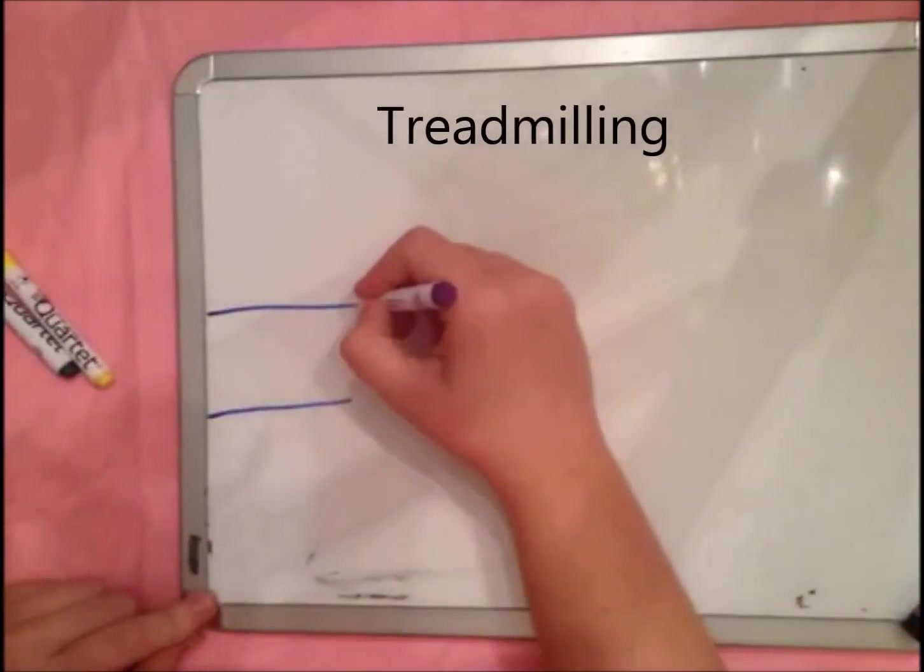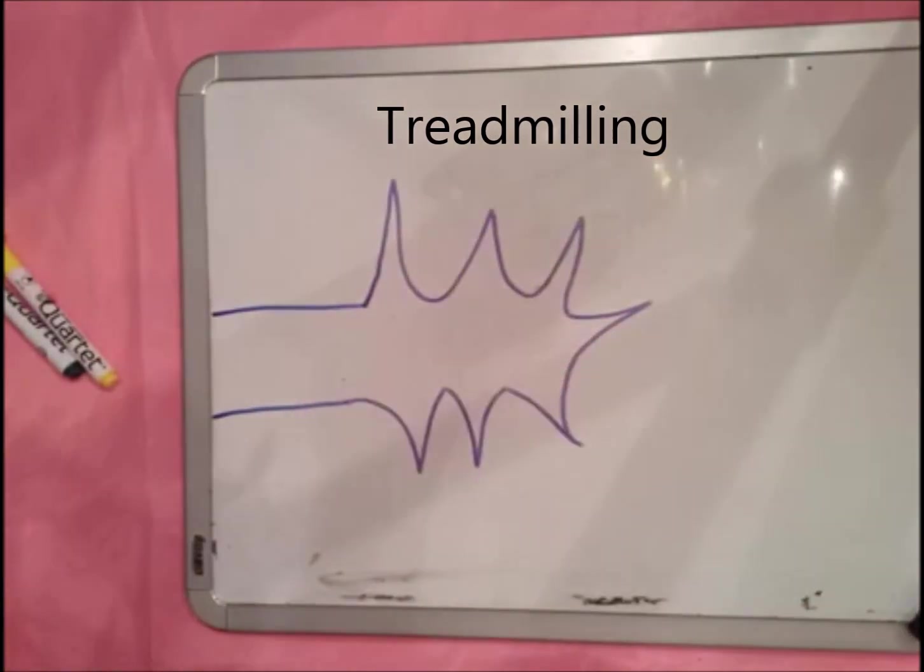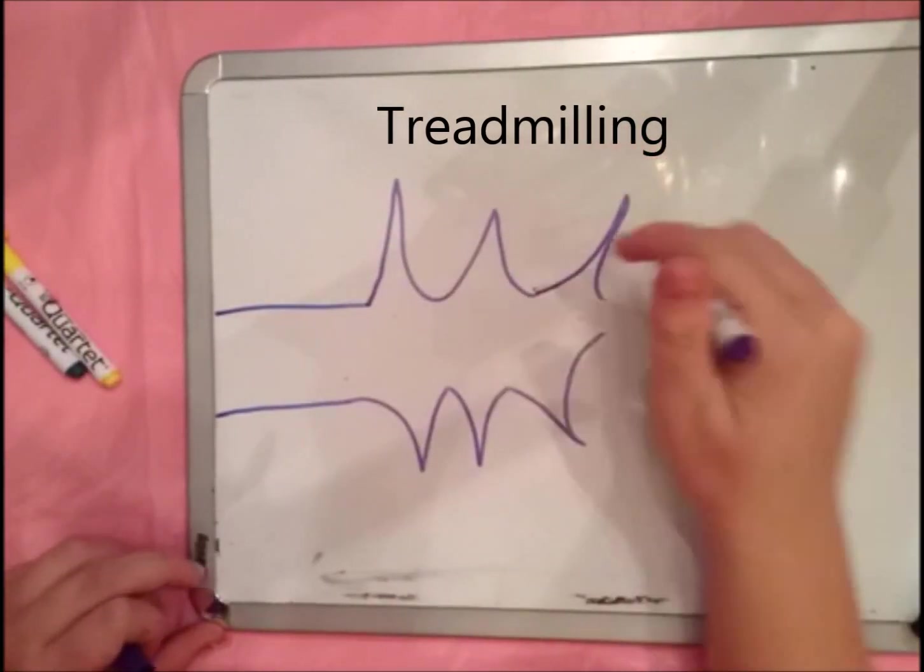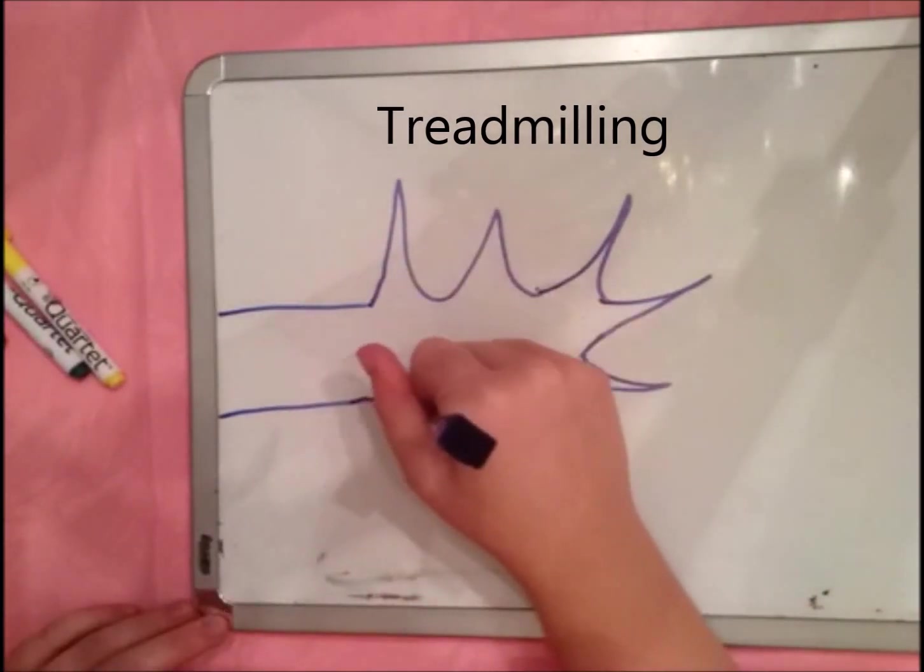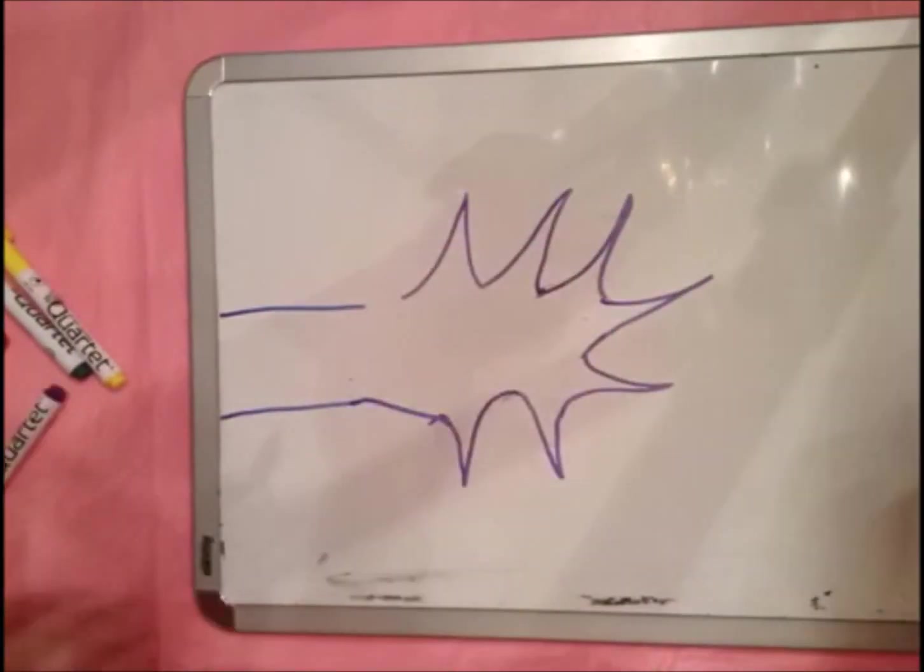The filipodia and lamellipodia are constantly growing by deconstructing themselves and then reforming, a process called treadmilling that causes the axon attached to the growth cone to continue to grow in the direction that the growth cone leads.